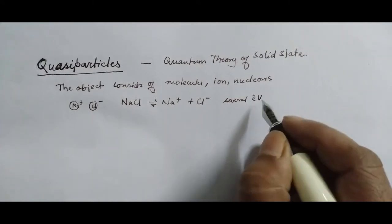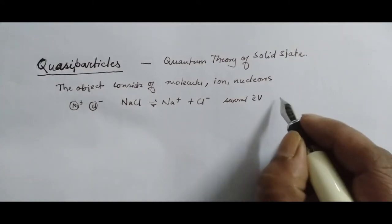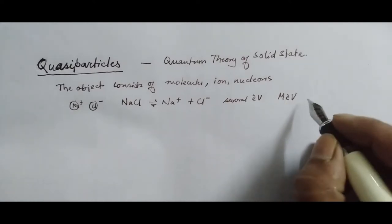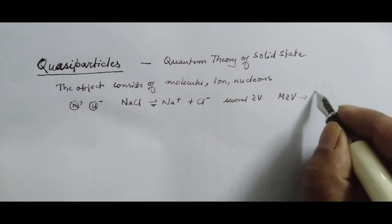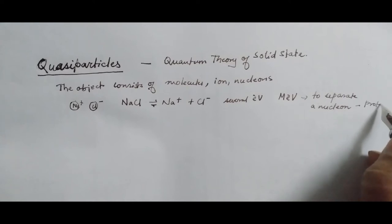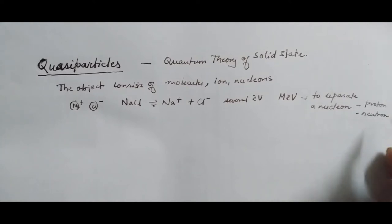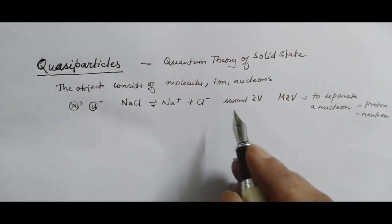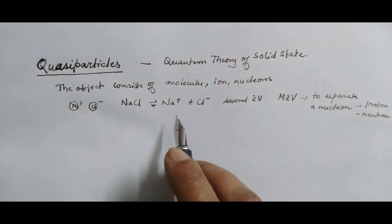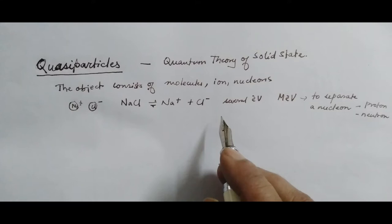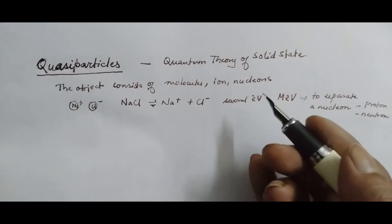Energy a million times greater would be needed to separate a nucleon — either a proton or a neutron — from a nucleus. Therefore, a structural unit is not something quite unambiguous or definite. What it depends on is the depth of penetration into the structure.